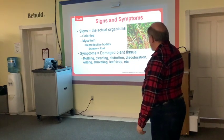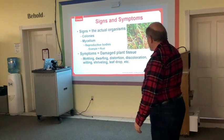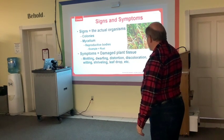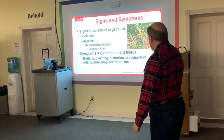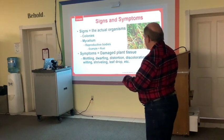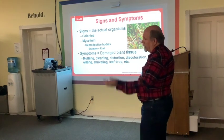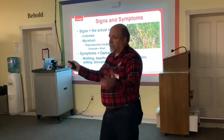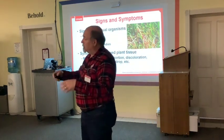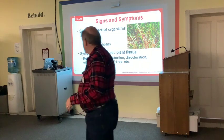Those are the mycelial parts we can see because there are so many growing in the same spot. Otherwise we see symptoms — mottling, dwarfing, distortion, discoloration, wilting, shriveling, leaf drop, and more.